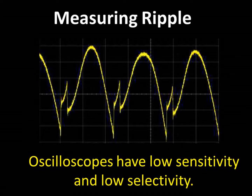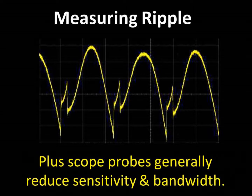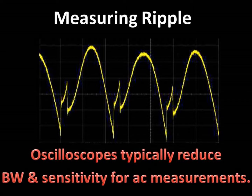Let's consider some of the obstacles that make it difficult to obtain accurate ripple measurements. First, we have the low sensitivity and low selectivity of oscilloscopes, which are typically the instrument of choice for measuring ripple. This is an inherent problem with the conventional approach of measuring ripple in the time domain. Adding to this difficulty is the fact that some oscilloscopes reduce the bandwidth and/or sensitivity of the measurement when AC coupled, and they may make the same compromises when measuring on the most sensitive scales.